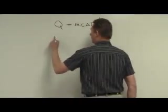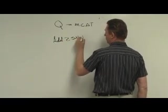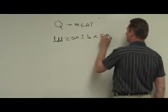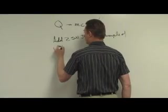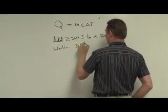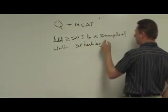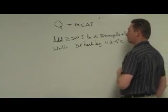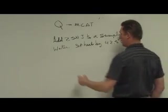Let's take and add 2,500 joules to a sample of water. The water heats by, let's say it heats by 42.5 degrees Celsius. Now, from that, I want to be able to calculate what was the mass of the water.